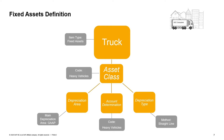The depreciation area is a financial dimension showing the valuation of the asset for a given purpose — for example, book depreciation, tax depreciation, or depreciation for cost accounting. You need to define one depreciation area as the main area. In our example, the main area is GAAP, that is, local generally accepted accounting principles. The user can define an additional area if necessary — in our example, we define IFRS as the additional area, that is, international financial reporting standards.